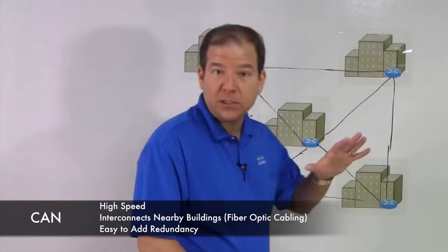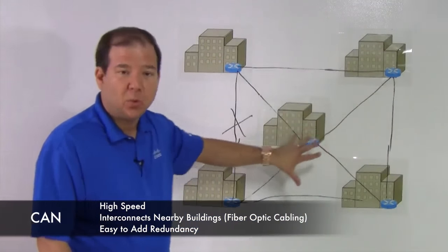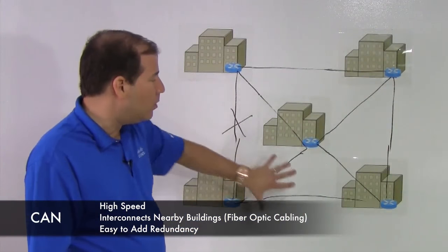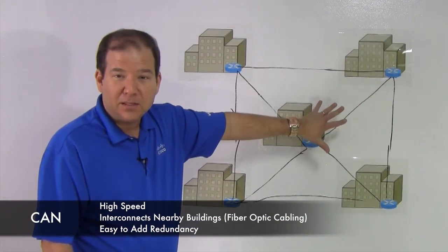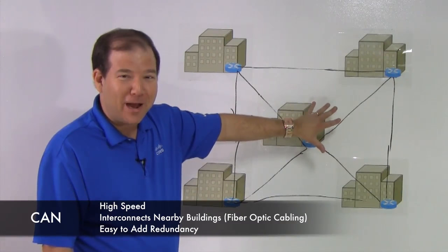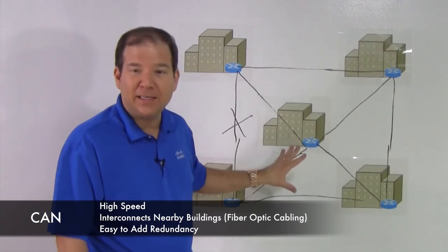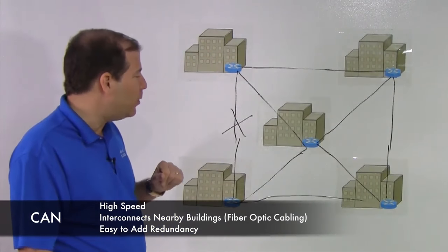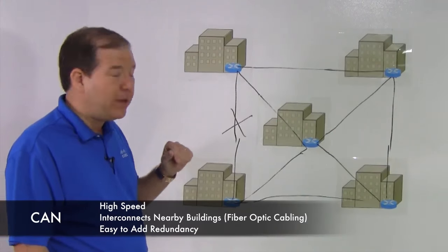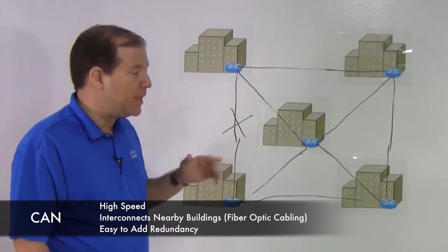And we could add some redundancy just by interconnecting buildings to one another. That way, we could lose one or more of these links. Sometimes it's called backhoe fade. If a backhoe digs up a piece of conduit and cuts the fiber, you still have full connectivity within the buildings, even if we were to lose one or maybe even multiple links in this topology.